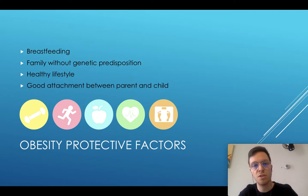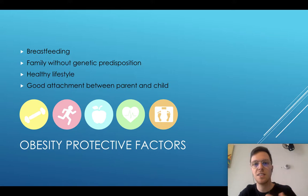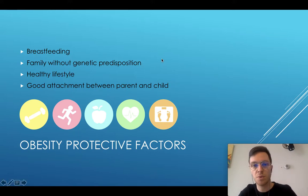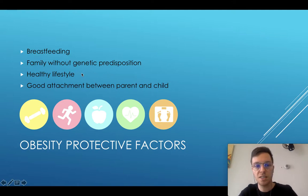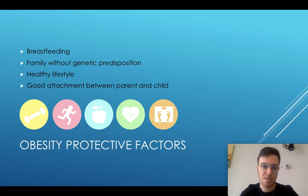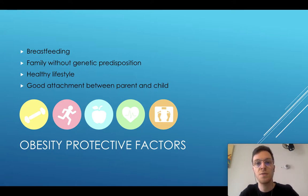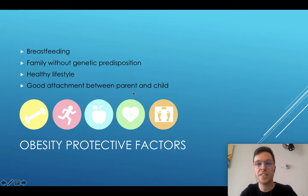There are also some obesity-protective factors, like did the child have breastfeeding? Is it from a family without genetic predispositions for obesity? Does it have a healthy lifestyle — does it eat vegetables, not only unhealthy food, and does it exercise enough? And is there a good attachment between the parent and the child?